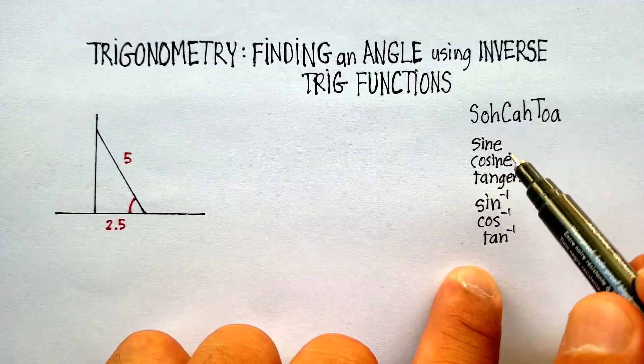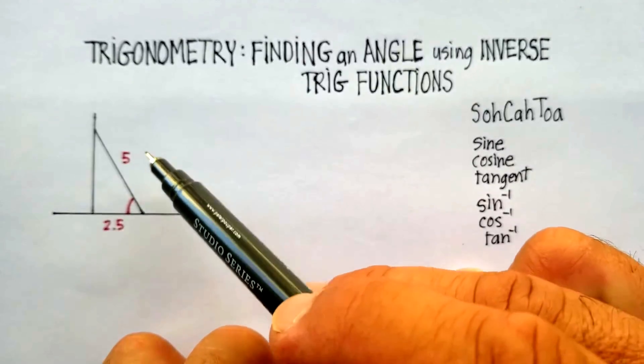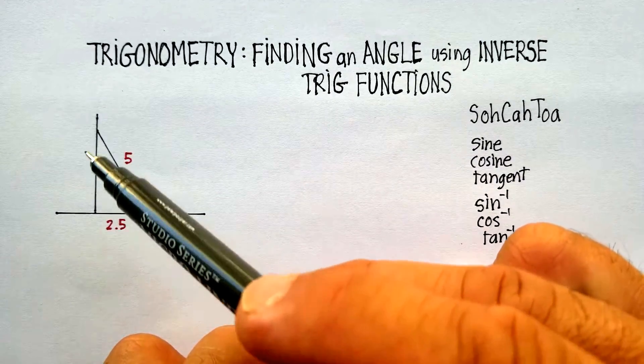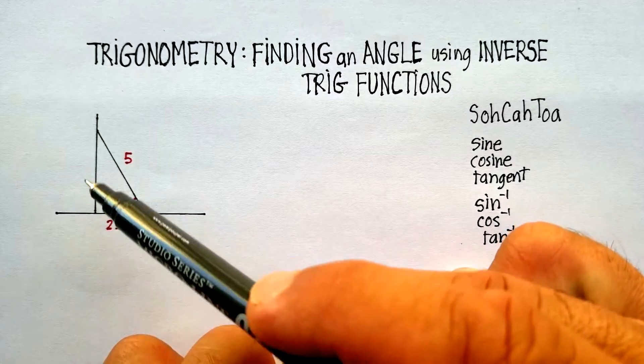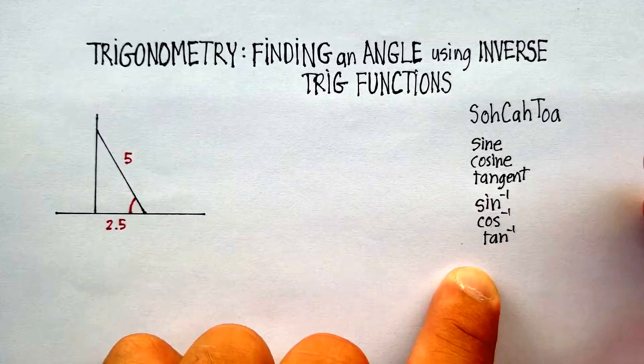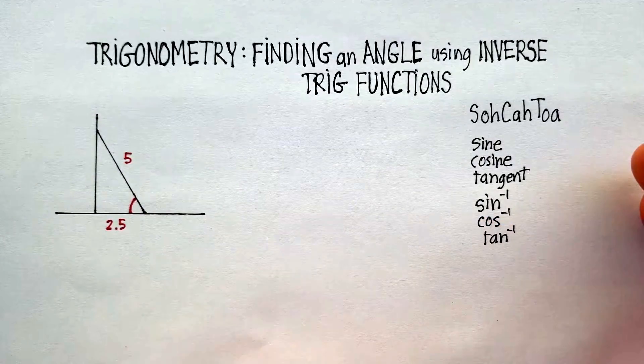Now, to use the regular trig functions, you can find the sides of a triangle, like 5, 2.5, and then whatever that might be using trig. But to find the angles inside, you want to use the inverse trig functions. Okay, so that's the first thing to try to remember.